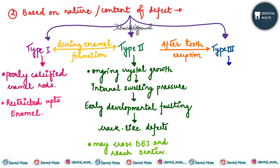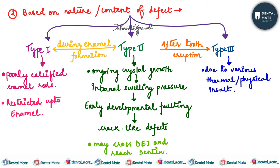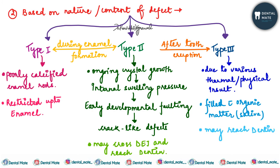Type 3 is formed after the tooth eruption. It represents a crack on the enamel surface formed due to various physical or thermal insults. The crack gets filled with organic matter, mainly from the saliva. To recap: Type 2 is formed because of early developmental faulting due to internal swelling pressure created during ongoing crystal growth — these crack-like defects can cross the DEJ and reach dentine — whereas Type 1 consists of poorly calcified enamel rods restricted to enamel.